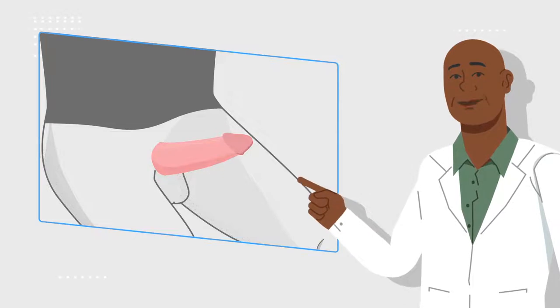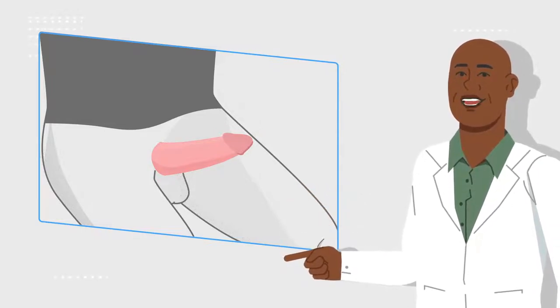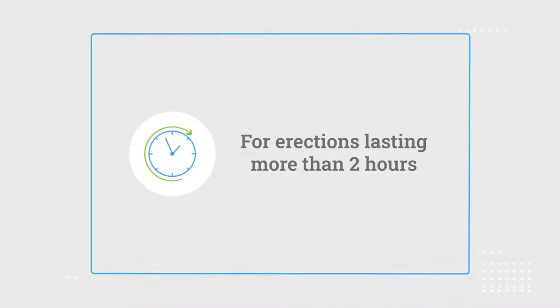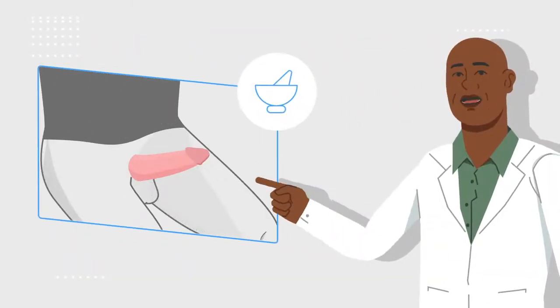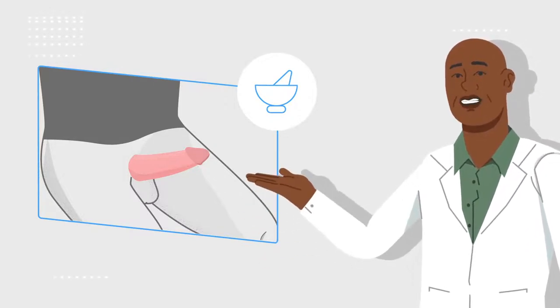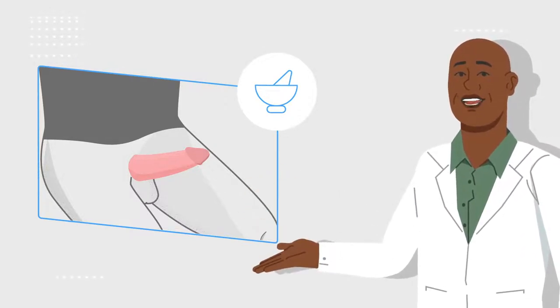What should you do if you experience priapism? There are some steps you can take from home. If you experience an erection lasting longer than 2 hours, there are some home remedies that are recommended prior to pharmacologic treatment or used in addition to pharmacologic treatments.